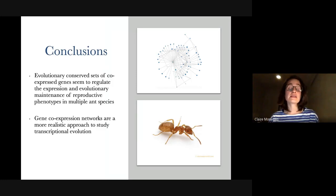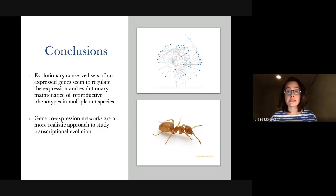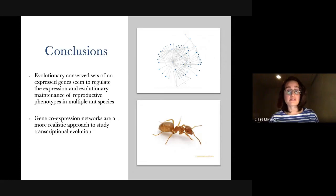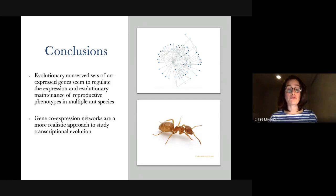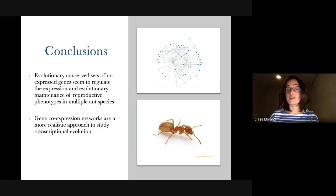Briefly, what we found is that there seems to be an evolutionarily conserved set of co-expressed genes across 16 species that actually regulates the expression and maintenance of reproductive phenotypes in multiple ant species. Looking at multiple genes rather than single genes, we can find commonly co-expressed gene sets that are important in maintaining the differences. It was also the first paper we wrote on networks — a nice way to show that networks may be a more realistic approach to study transcriptional evolution, not only for caste but for any studies looking at phenotypes.